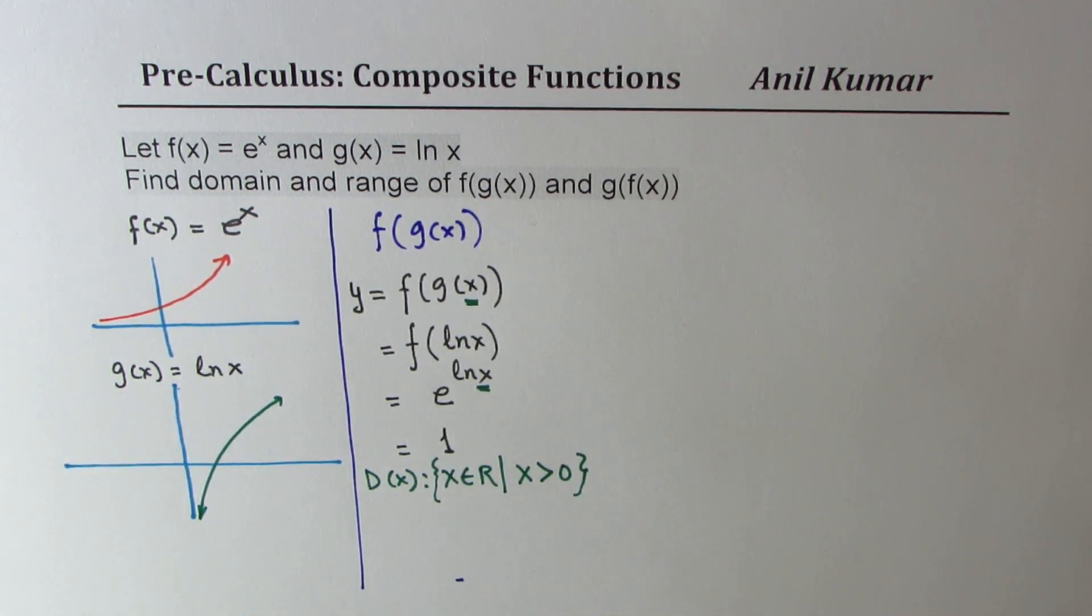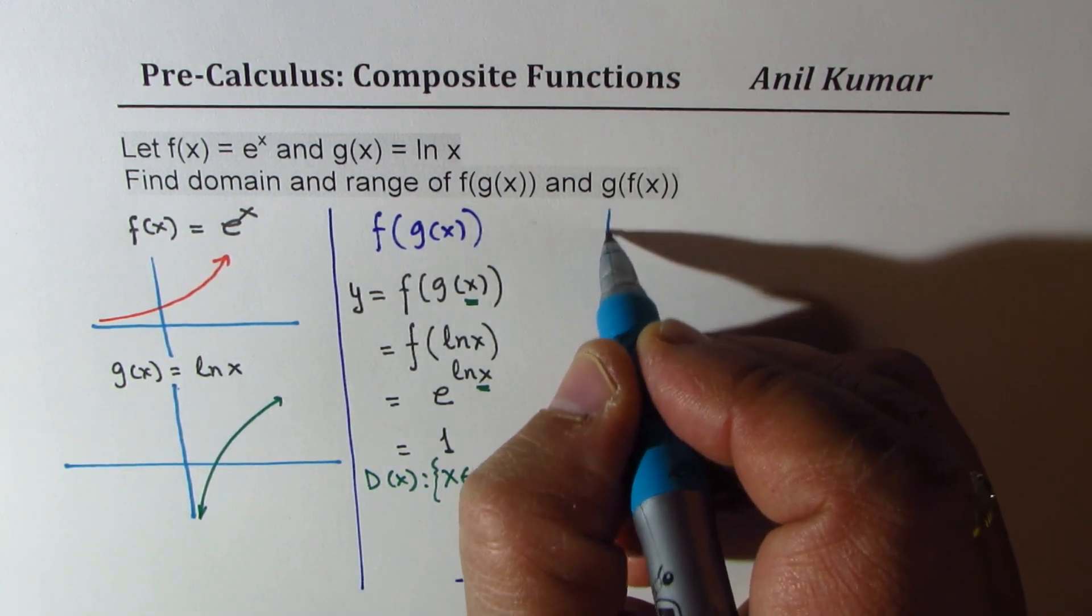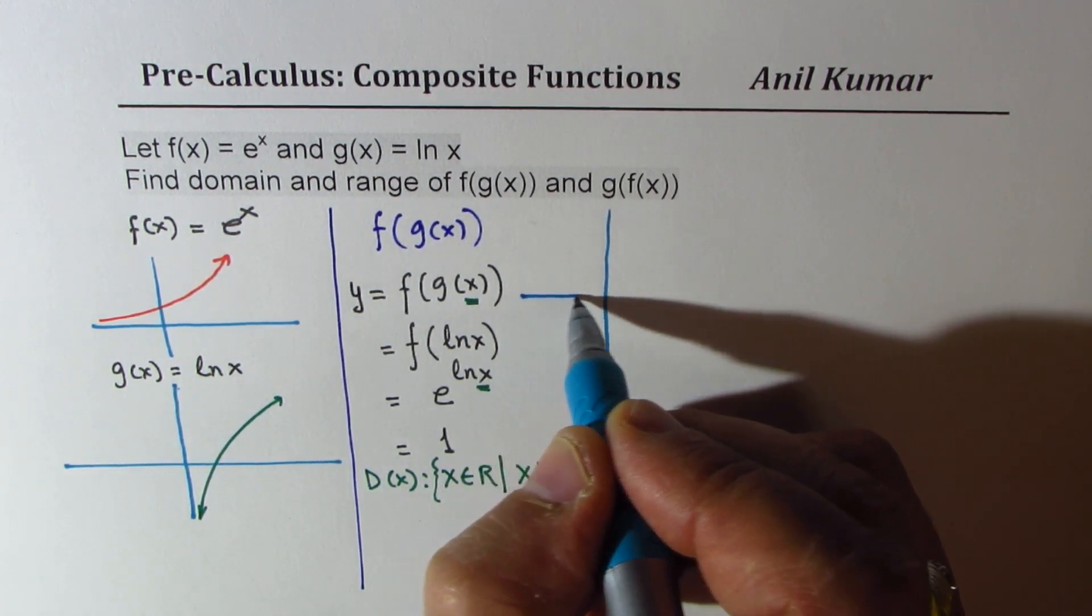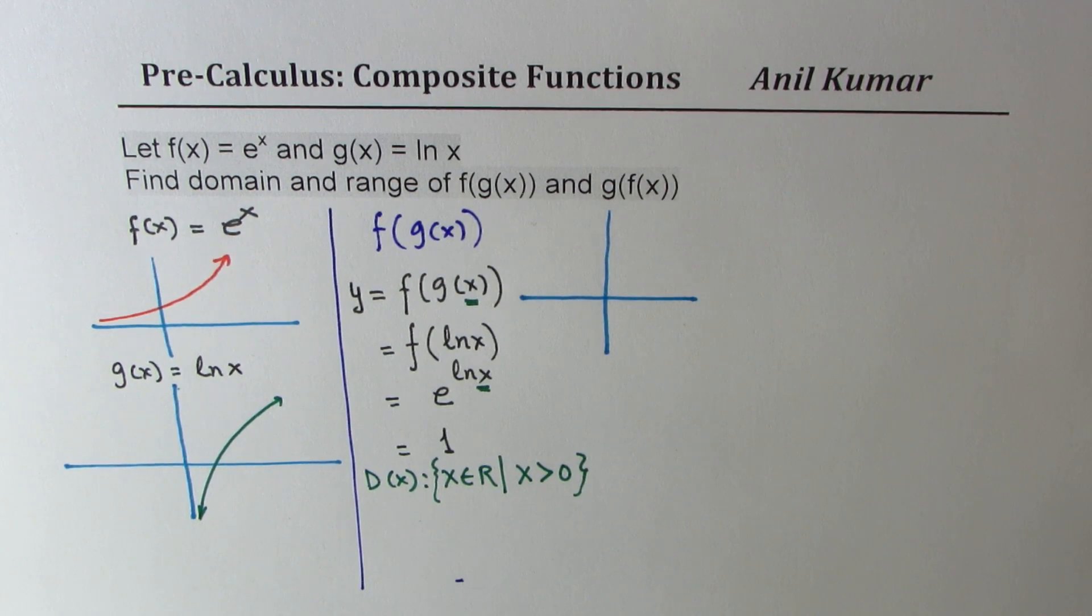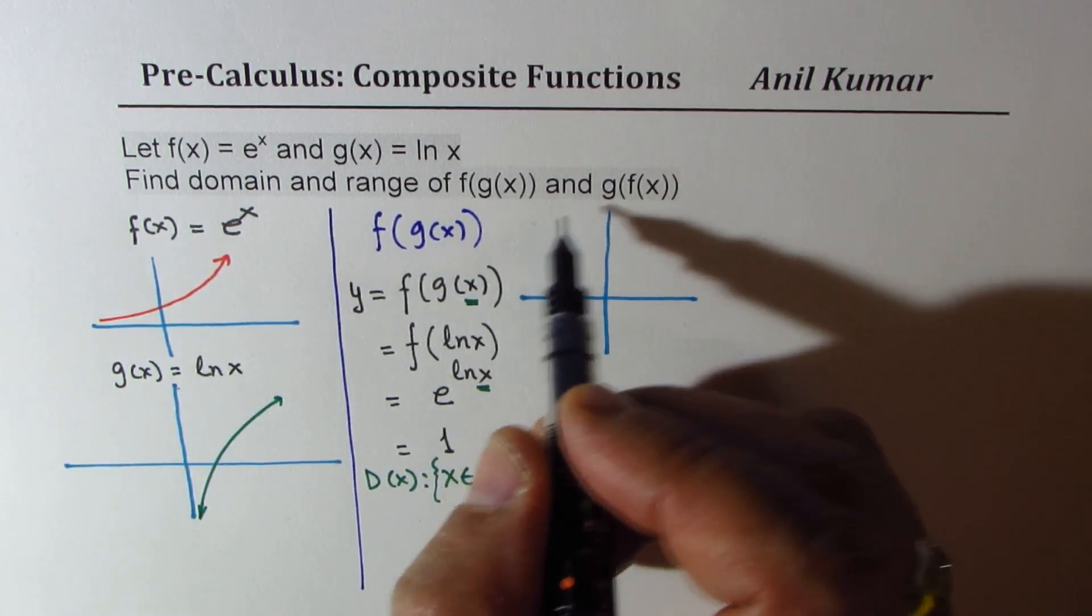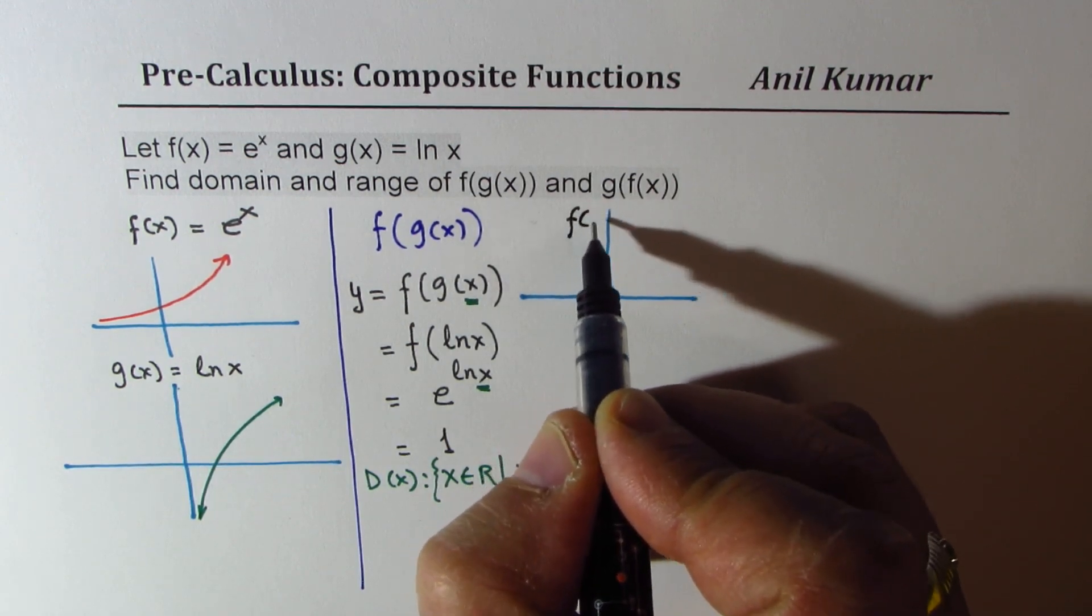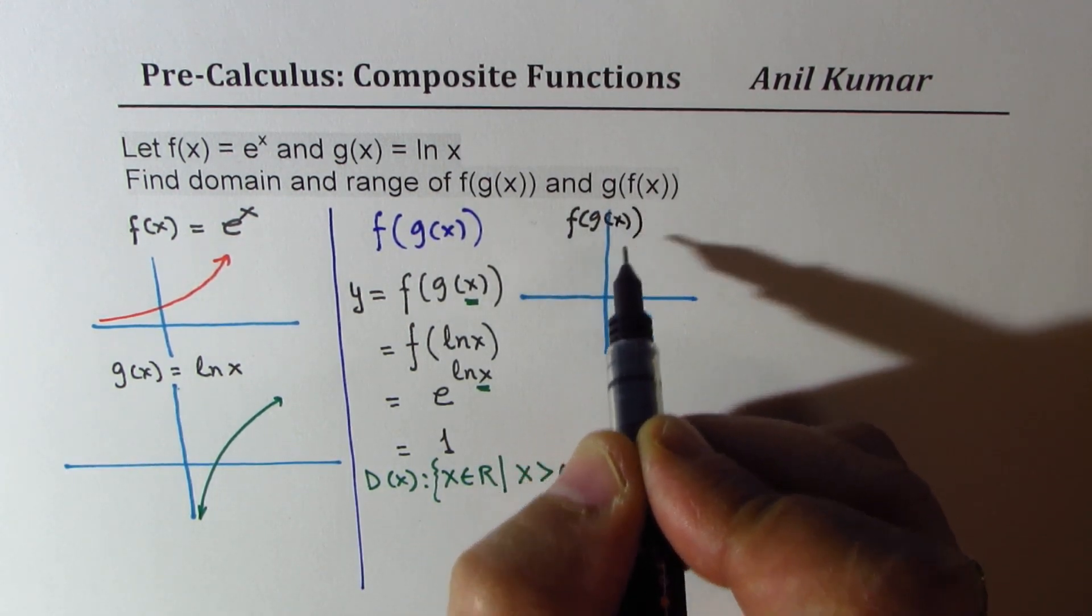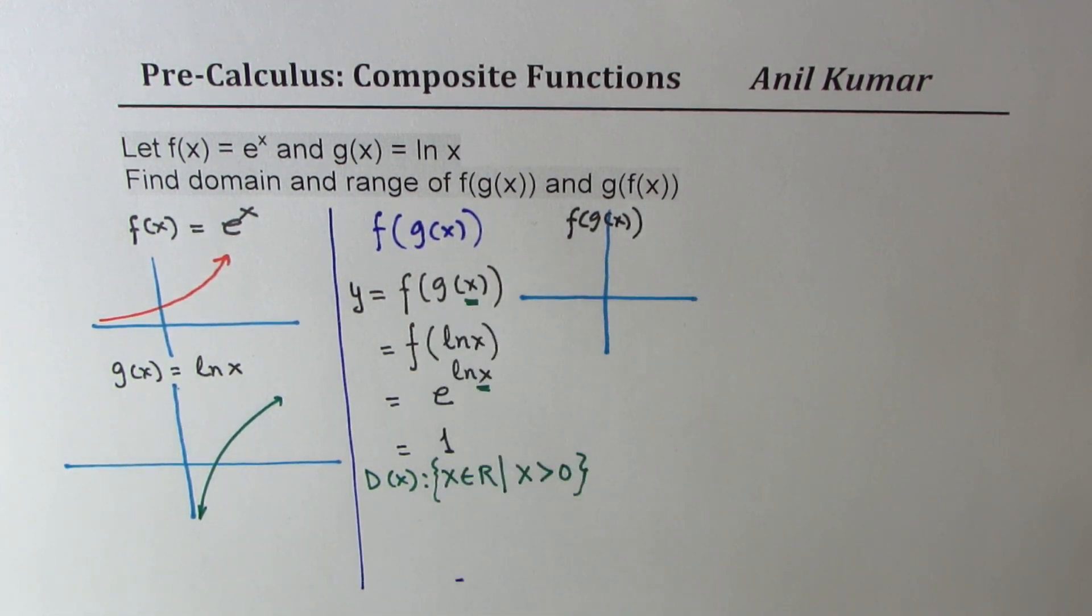Perfect. So that becomes the domain of this particular function. Now how do we get the range of this function? Well, to get the range, let's look into its graph of the composite function. Let me write f(g(x)) here. That is the inside function which we are talking about.